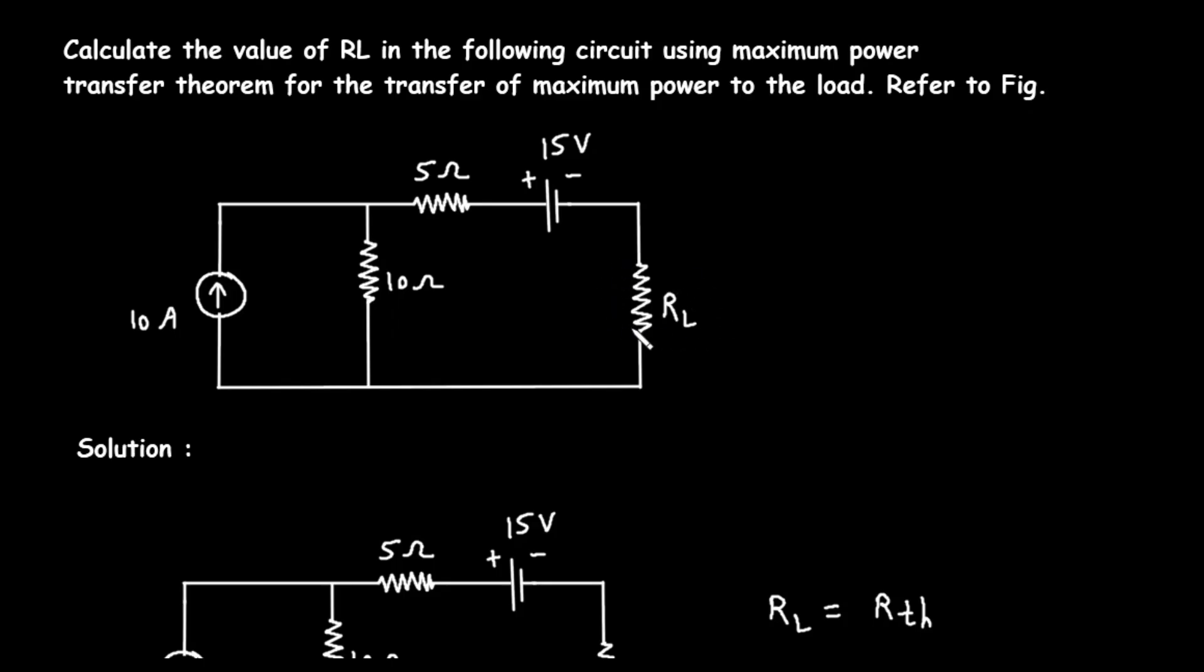This is the component whose value we need to determine. The problem asks us to find the specific value of R sub L that will absorb the most power from the rest of the circuit. To solve this, we use the maximum power transfer theorem.